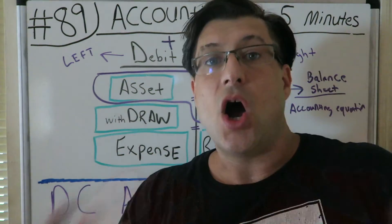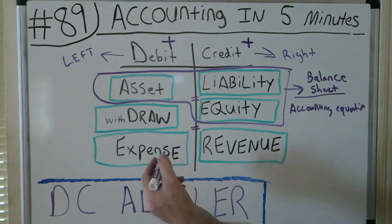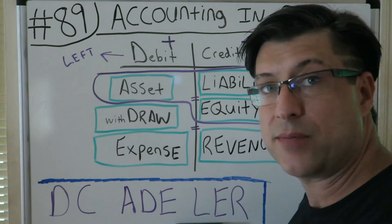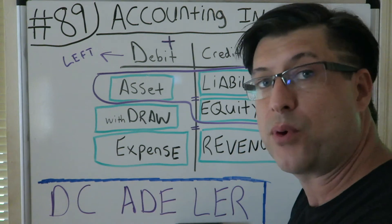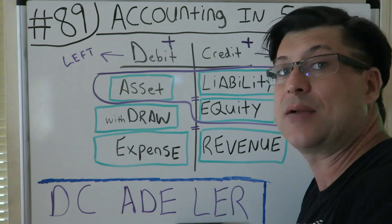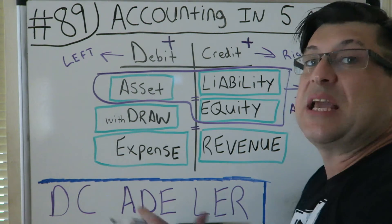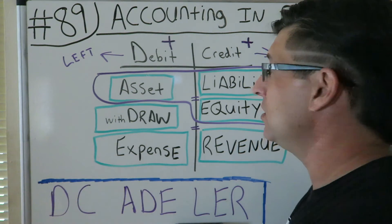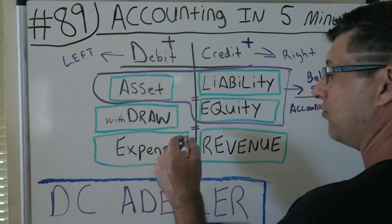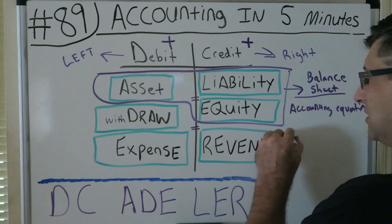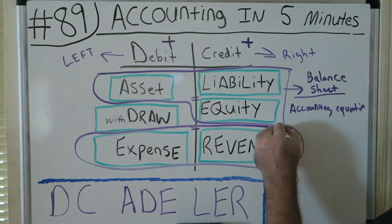There is also an income statement, which is very important — I'd say the second most important statement after the balance sheet. That is Revenues minus Expenses — that's the income statement.